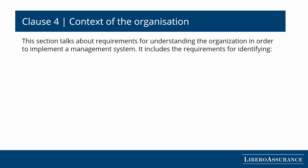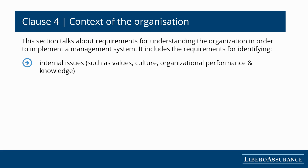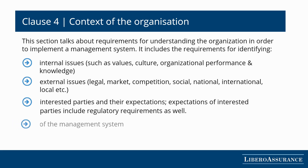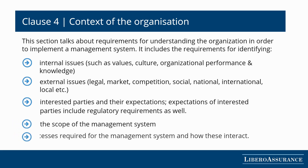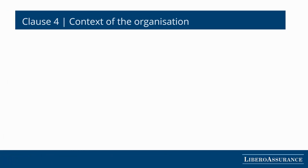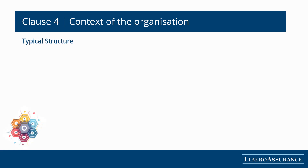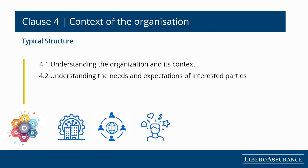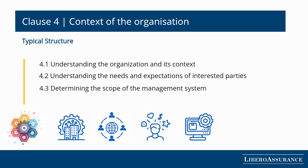The fourth section covers requirements for understanding the organization's context in order to implement a management system. It specifies the requirements for identifying internal and external issues, identifying interested parties and understanding their needs and requirements, identifying the management system's scope, and determining the processes required for the management system and how these interact. The subsections cover understanding the organization and its context, understanding the needs and expectations of interested parties, and determining the scope of the management system — for instance, quality, environmental, or occupational health and safety.